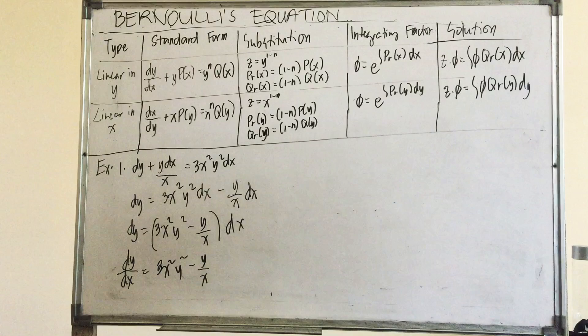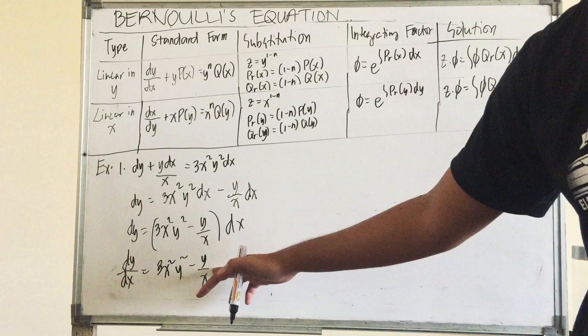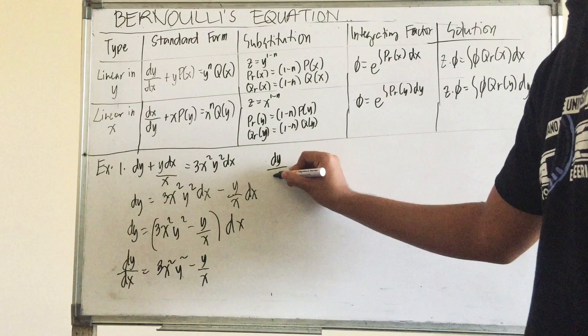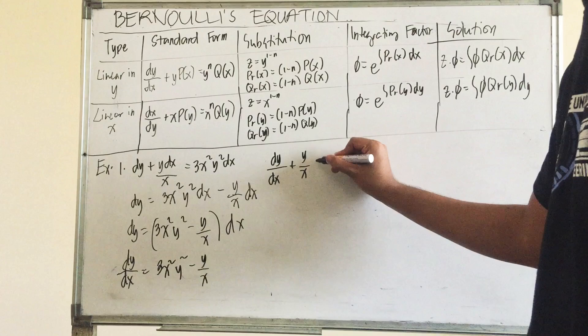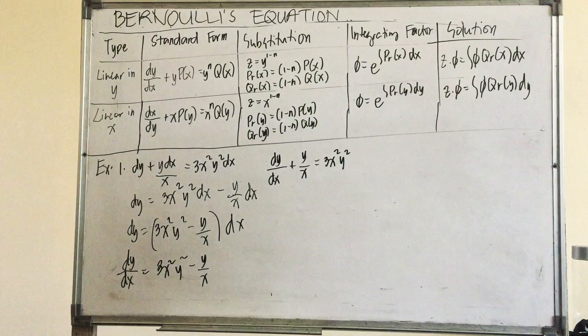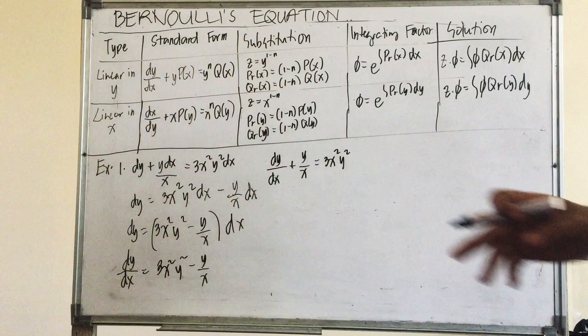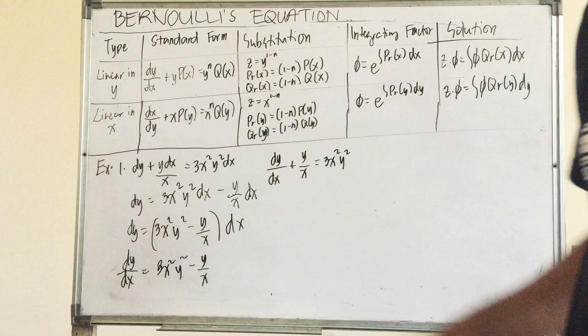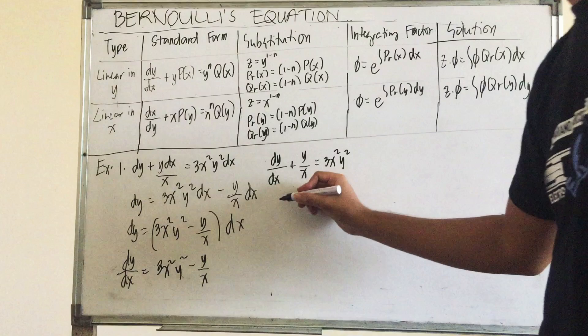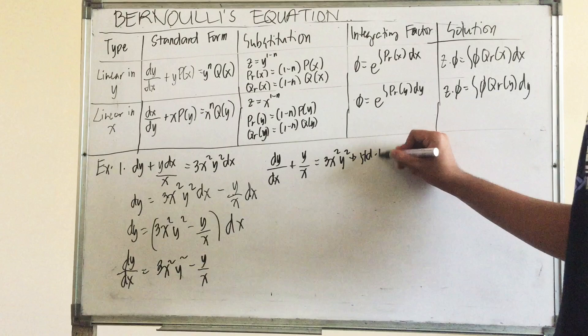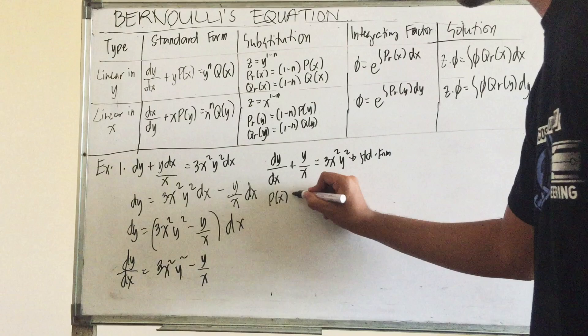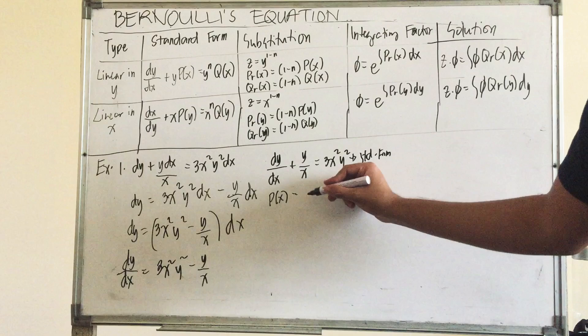The y p(x) term from this equation is negative y over x. Transposing it to the other side gives us: dy over dx plus y over x equals 3x squared y squared. Now let's identify the values. From this standard form, p(x) is equal to 1 over x.